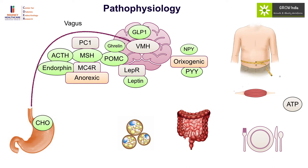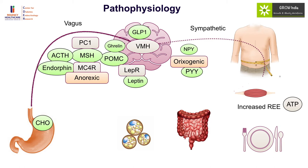Once the body senses sufficient adiposity and sufficient leptin production, it will also act in other ways — predominantly by using the sympathetic pathway to increase resting energy expenditure, which plays an important role in overall metabolism. When energy levels and leptin are even higher, there is a permissive role to grow, to support bone development, to develop puberty, and to consider pregnancy.